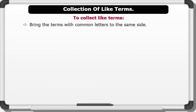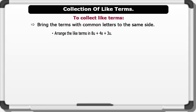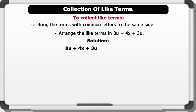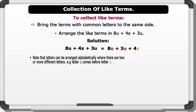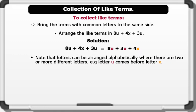Collection of like terms. To collect like terms, we simply bring the terms with common letters to the same side. Let's see an example. Arrange the like terms in 8U plus 4X plus 3U. Solution: 8U plus 4X plus 3U equals 8U plus 3U plus 4X. Note that letters can be arranged alphabetically where there are two or more different letters.